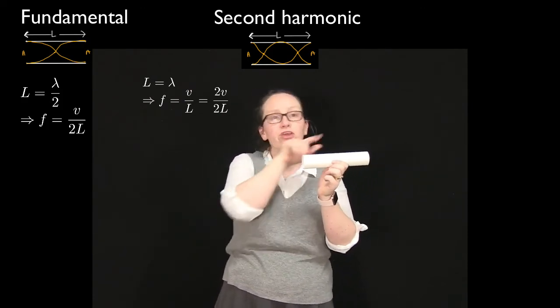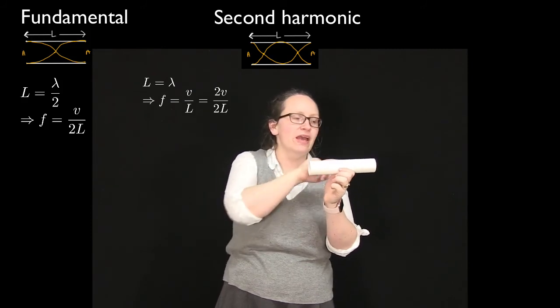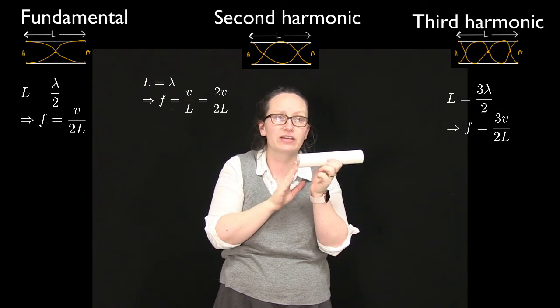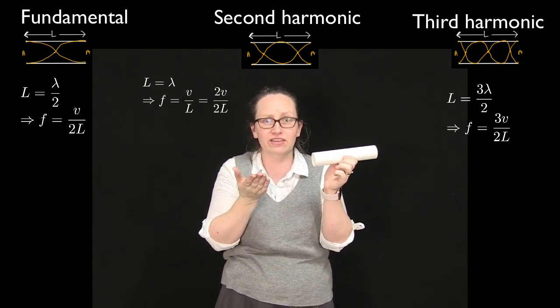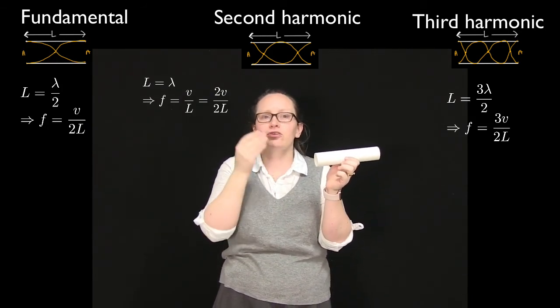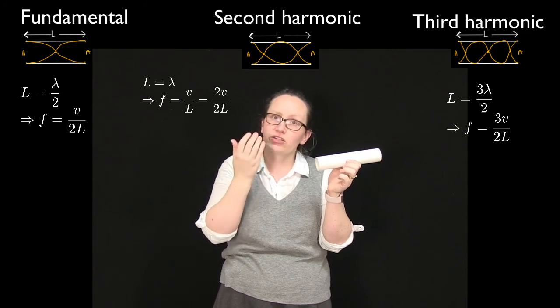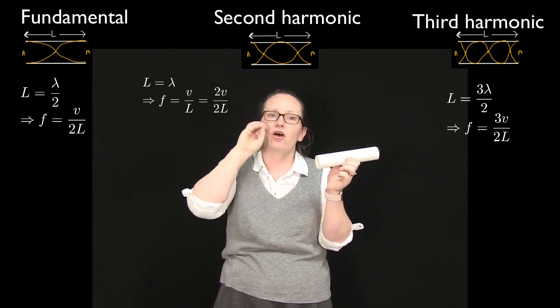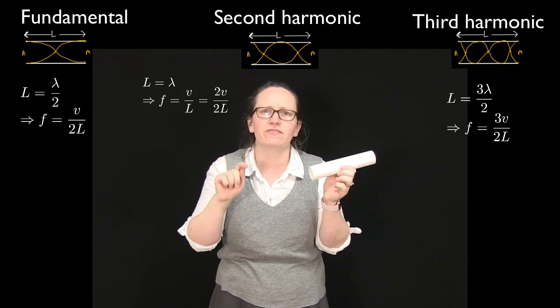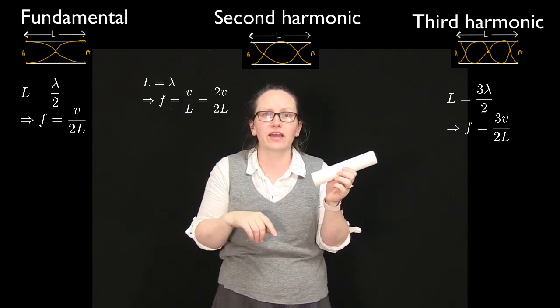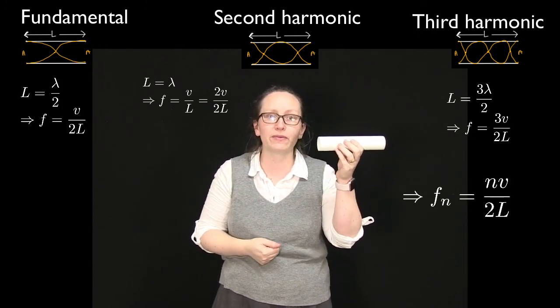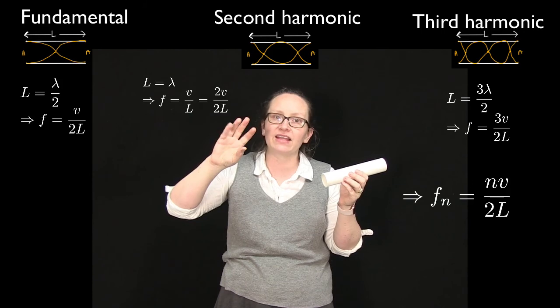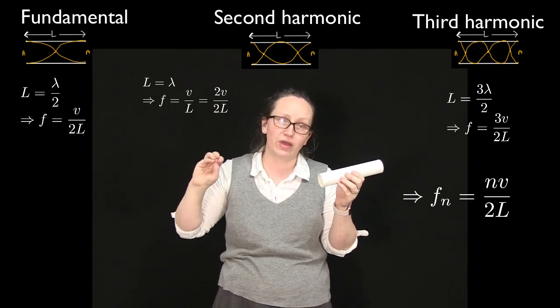Okay, and then the third harmonic is when we have three half wavelengths inside this pipe, as shown in this final figure. And in this case the length of the pipe is equal to three half wavelengths, and so the frequency of this third harmonic is equal to 3v over 2L. So hopefully now you're starting to see the pattern. If we wanted to find the nth harmonic in the pipe open at both ends, we'd have f_n is equal to n times v over 2L.